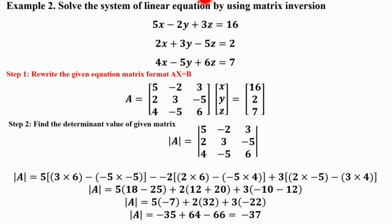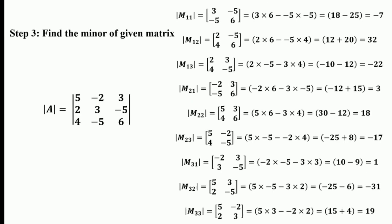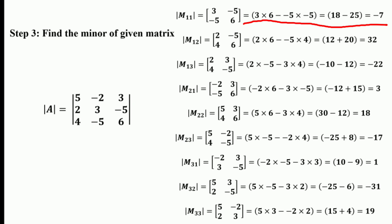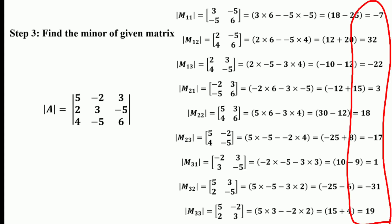After finding the determinant, the next step is to find the minors of the given matrix. For the first minor M₁₁, corresponding to element 5, we remove its row and column to get the 2×2 determinant [3, −5; −5, 6]. So 3×6 − (−5×−5) = 18 − 25 = −7. Computing all minors in the same way, we get: −7, 32, −22, 3, 18, −17, 1, −31, and 19.